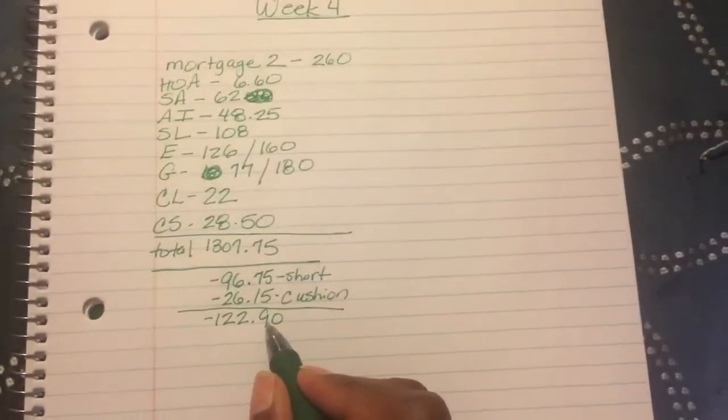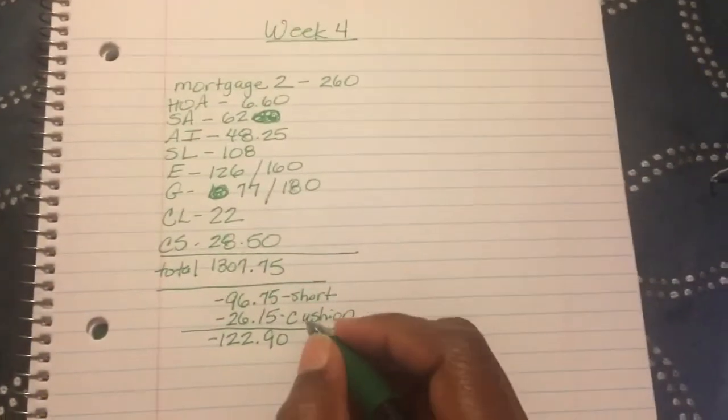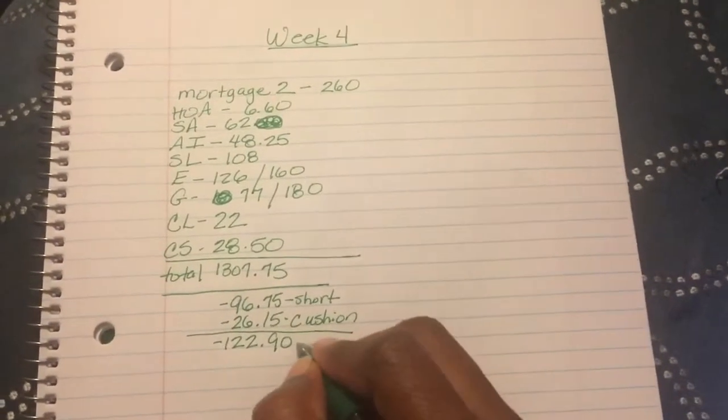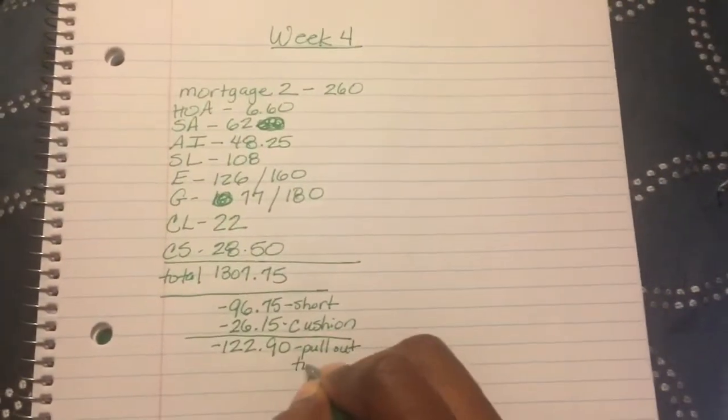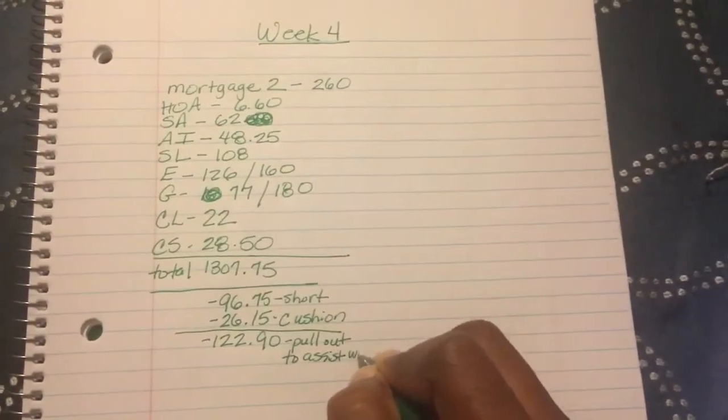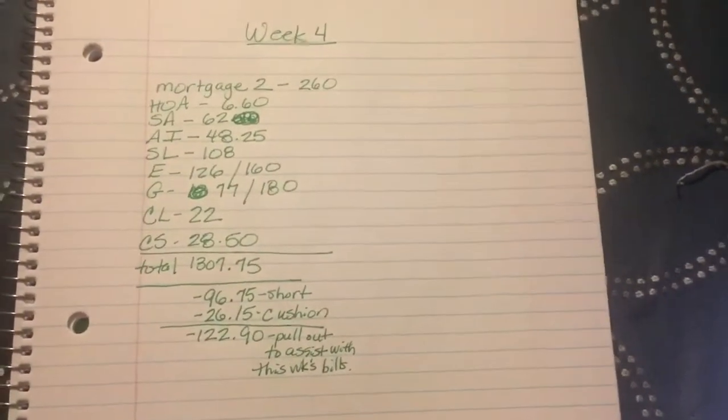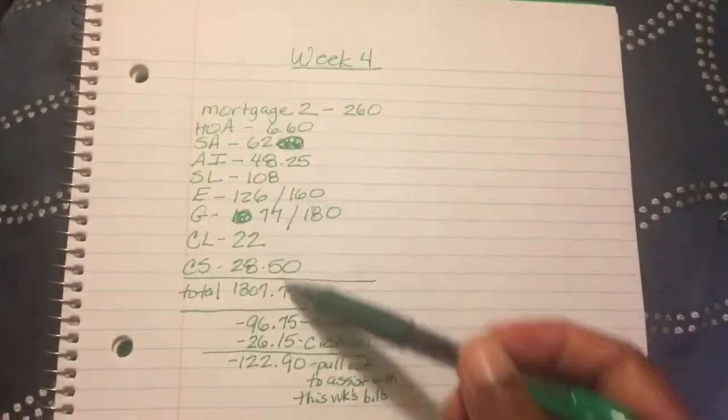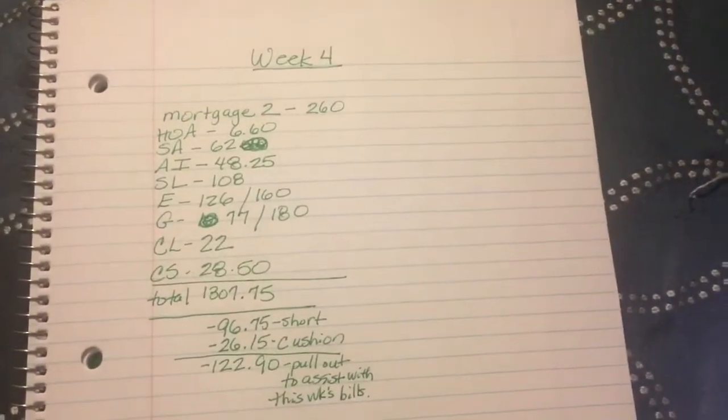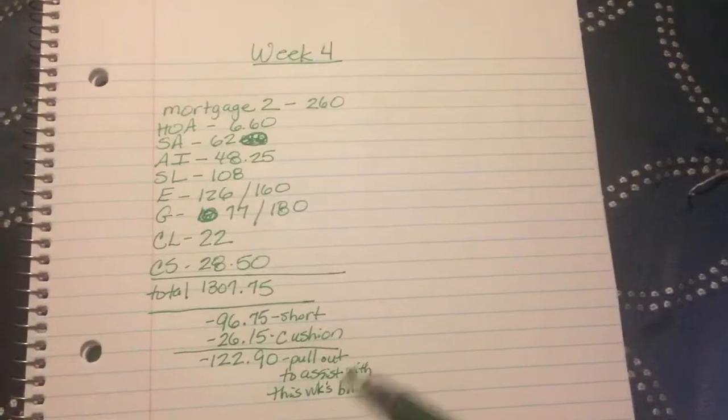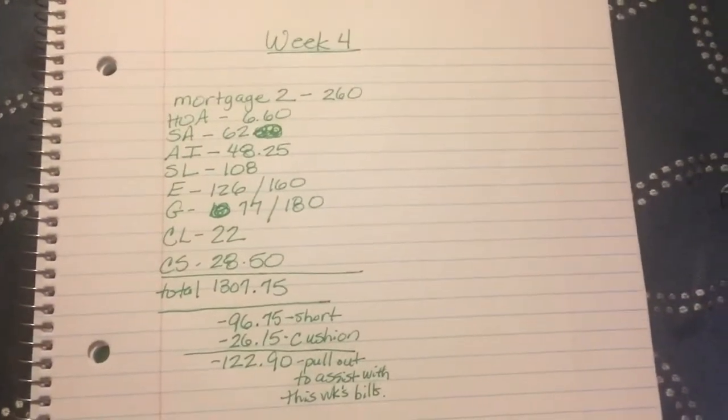And with that being said, that must mean that I have to do what? You are right, I heard you. I am going to pull out monies from the bill savings account. So I put my little handy-dandy note there. You all know how I do it. Pull out to assist with this week's bills. Now, remember the next step after I go through and tally up all the bills that I want this week's paycheck to cover, the next thing I do is I go back and I put my little PA notation by those bills amounts that I need to put away into the bill savings account.